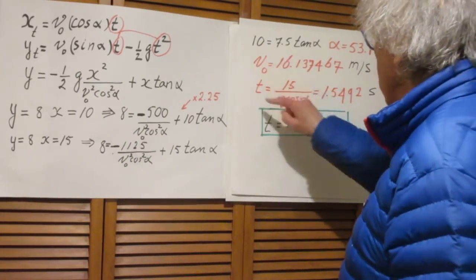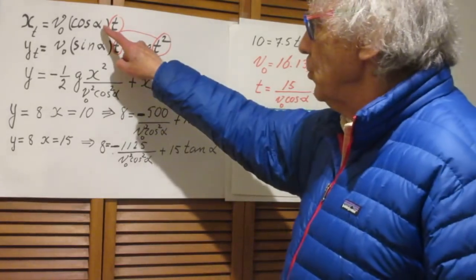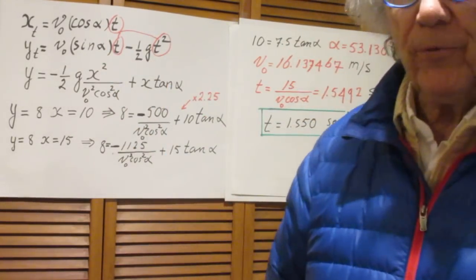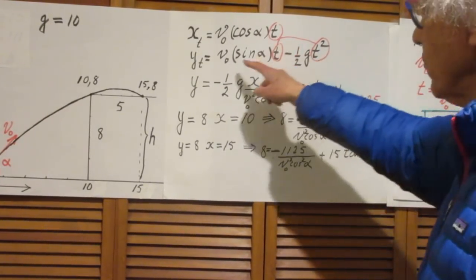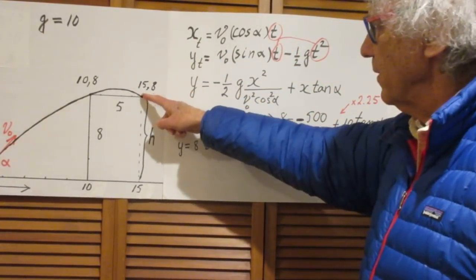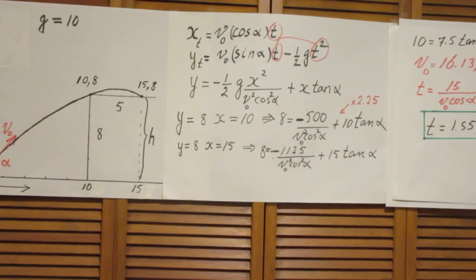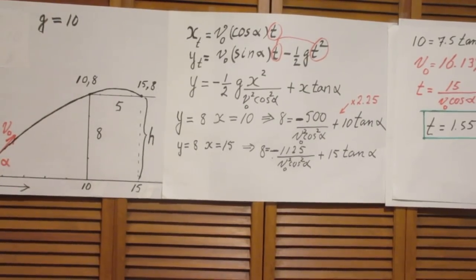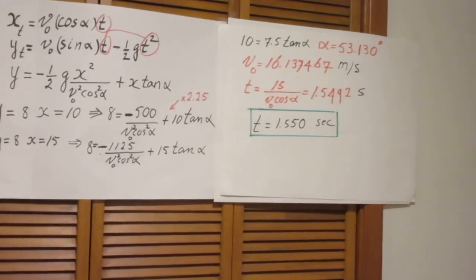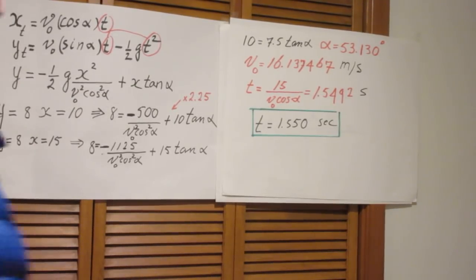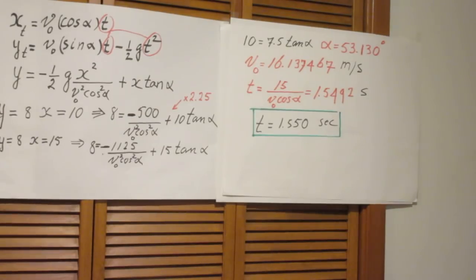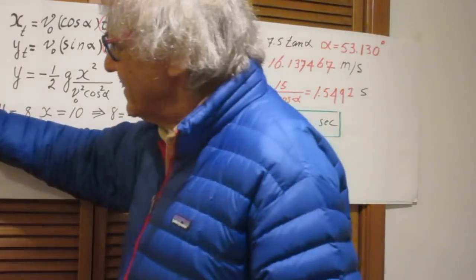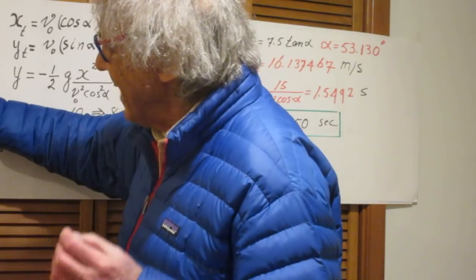And once you know V0 and you know alpha, you go back to this equation if you want to. And you will find what T is. Because x equals 15. That's when the object hits target. And so you can now solve for T. And what you find is that T is 1.5492 seconds.